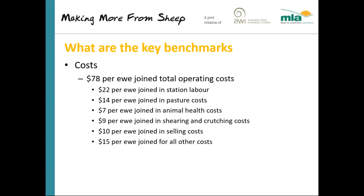How is that $78 broken down? It's roughly $22 per ewe in station labour — owner wages and staff. It's $14 per ewe joined in pasture costs: fertiliser, lime, chemicals, seed if you're renovating pastures. It's $7 per ewe joined in animal health costs — drenches, vaccinations. And $9 per ewe joined in shearing and crutching costs — shearers, crutchers, shed hands — including the cost of crutching and shearing lambs.